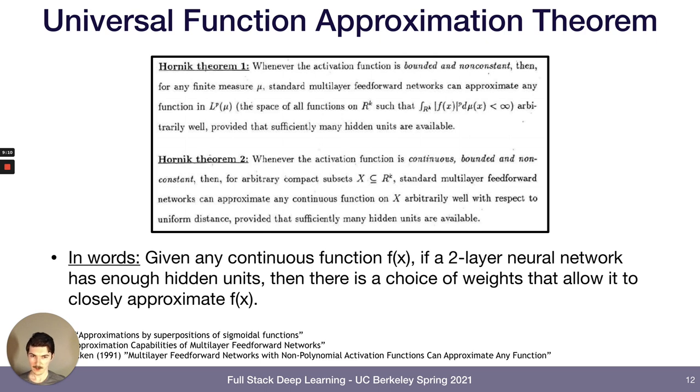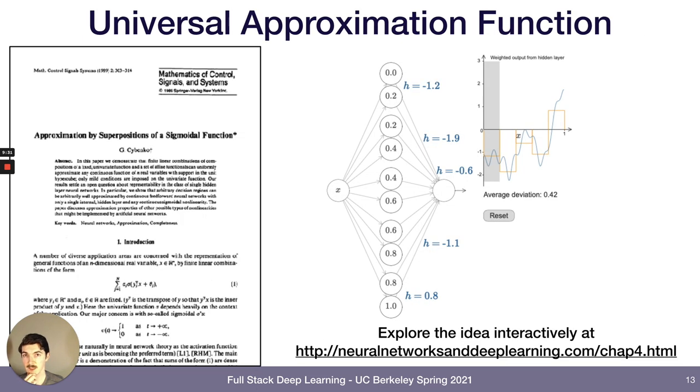And to summarize some theoretical results, you can prove that any two-layer neural network, so that's one hidden layer, right, so inputs to one hidden layer to outputs, if given enough hidden units, can be found to have some set of weights that can approximate any function. So that's known as the universal approximation theorem.